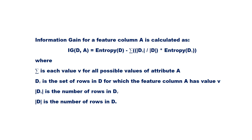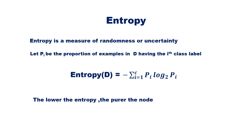Here, dV is the set of rows in D for which the feature column A has the value V. |dV| is the number of rows in dV, and |D| is the number of rows in D. We have already seen entropy in the first video. Entropy of D is given as minus summation over i equal to 1 to C of pi log2(pi), where pi is the proportion of examples in D having the i-th class label.